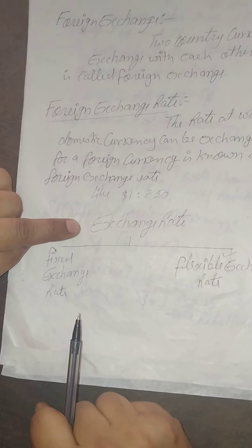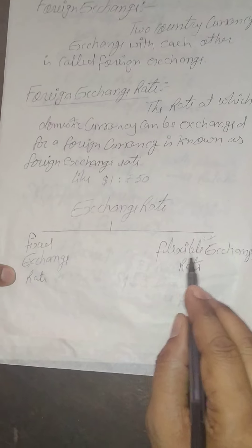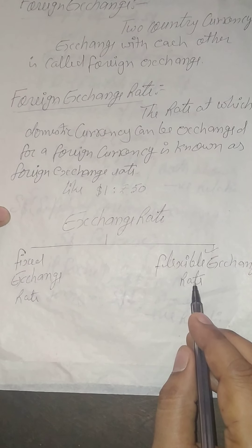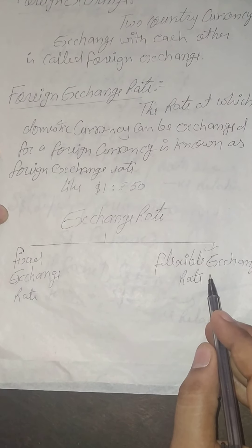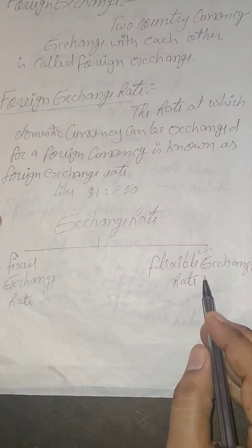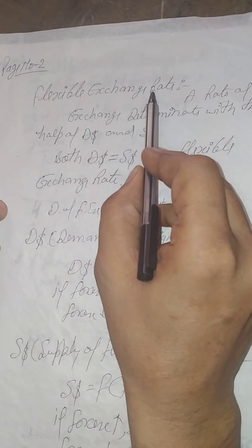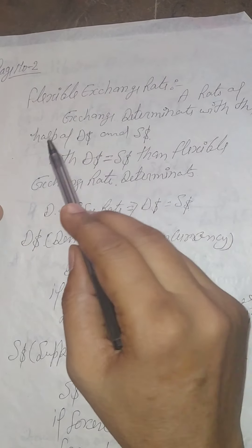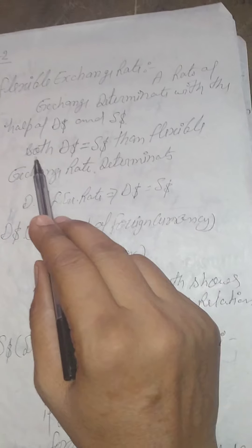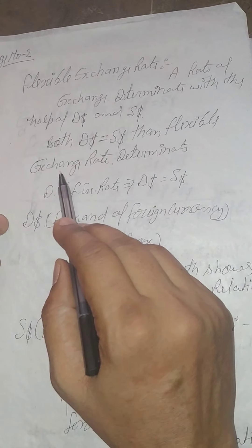We have two types of exchange rate: fixed exchange rate and flexible exchange rate. Flexible exchange rate is also known as par exchange rate. First of all we discuss flexible exchange rate. A rate of exchange is determined with the help of demand of foreign currency and supply of foreign currency.